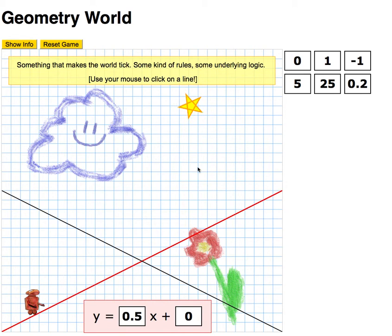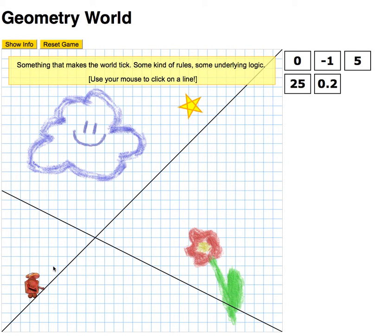And you can just grab these cards from the side and drag them into either the slope or the y-intercept attributes in order to change them with the line. So you can change lines around.